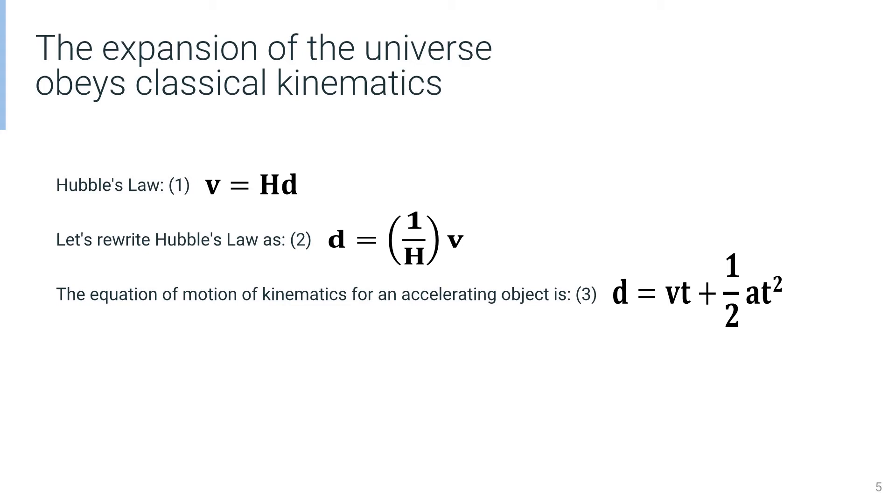Hubble's Law in the form of equation 1, velocity equals Hubble constant times distance (v = Hd), is conceptually difficult to understand in terms of acceleration. We therefore propose to rewrite Hubble's Law as equation 2: distance equals 1 divided by Hubble constant times velocity (d = (1/H)v).